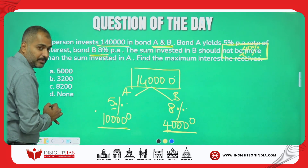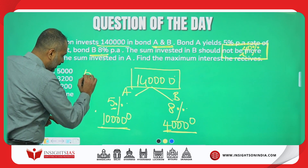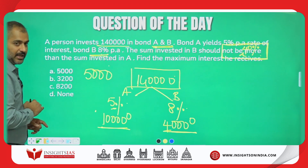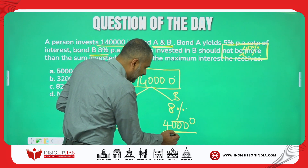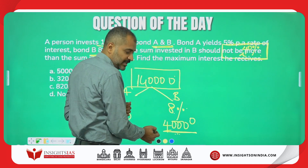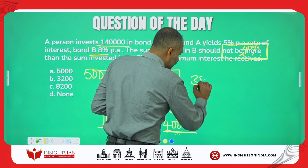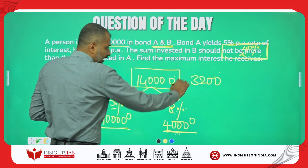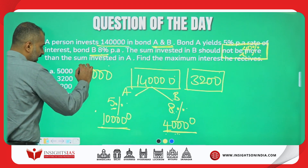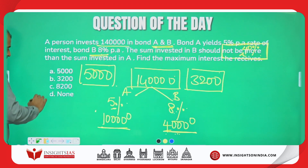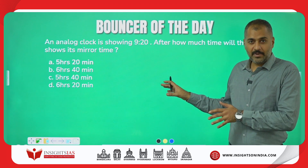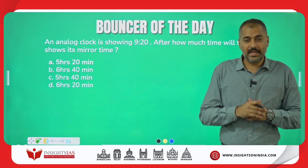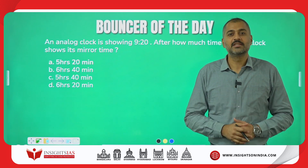When I invest ₹1,00,000 at 5% per annum, I get an interest of ₹5,000. Similarly, ₹40,000 at 8% gives 8 × 4 = ₹3,200. So the total maximum interest received is ₹5,000 + ₹3,200 = ₹8,200. This is today's bouncer — try to solve it and put your answer in the comment section. Thank you, see you in the next video!